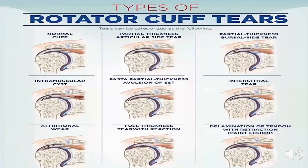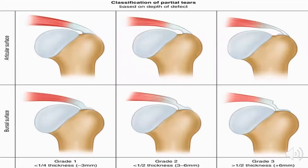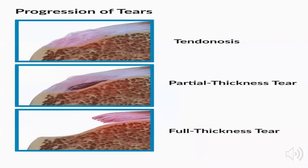As seen in these diagrams, partial articular and partial bursal surface tears are illustrated. On the articular surface: Grade 1 involves less than 25% of the tendon thickness, Grade 2 about 50%, and Grade 3 more than 50%. Similarly, on the bursal side: Grades 1, 2, and 3 are defined. This shows the progression from tendinosis to partial thickness tear and then to a full thickness tear.